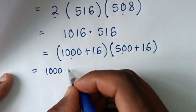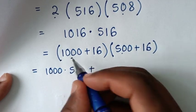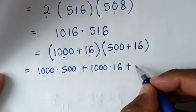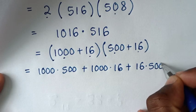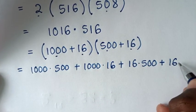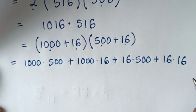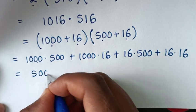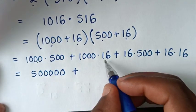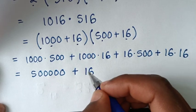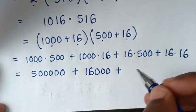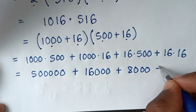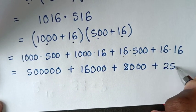Expanding: 1000 times 500, plus 1000 times 16, plus 16 times 500, plus 16 times 16. That gives 500000, plus 16000, plus 8000, plus 256.